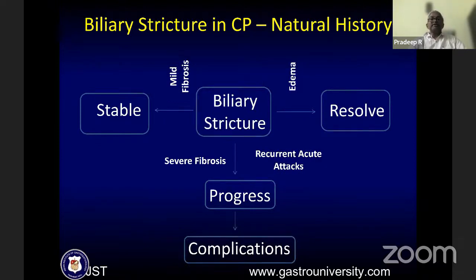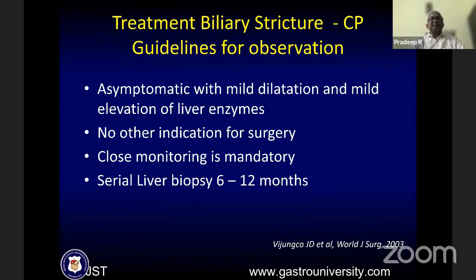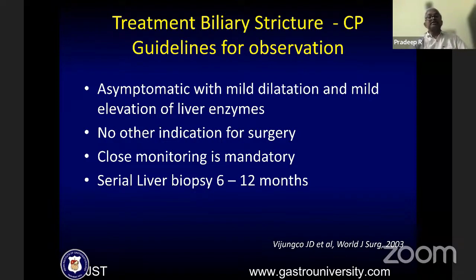How to approach these patients: mild fibrosis with stable liver function tests — you can just observe, as edema usually resolves. Severe fibrosis or recurrent acute attacks can progress and lead to complications. The approach to biliary stricture depends on extent and progression. Asymptomatic mild dilatation with mild elevation of liver enzymes can be observed when there is no other indication for surgery. Close monitoring is mandatory, though some suggest serial liver biopsy every six months to detect biliary cirrhosis — not all agree on this.